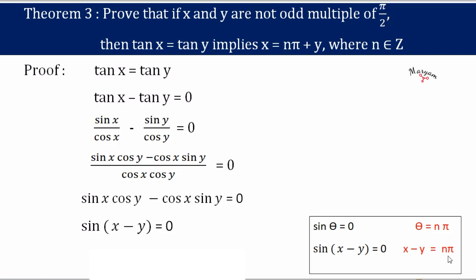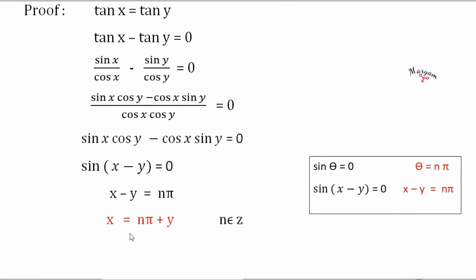So for sin(x − y) = 0, we get x − y = nπ. Shifting y to the other side, x = nπ + y, where n belongs to integers. That's all.